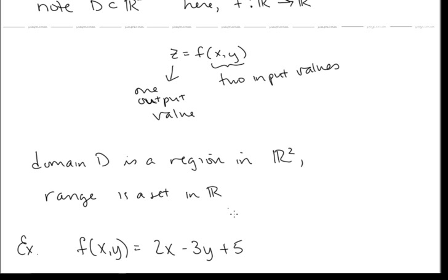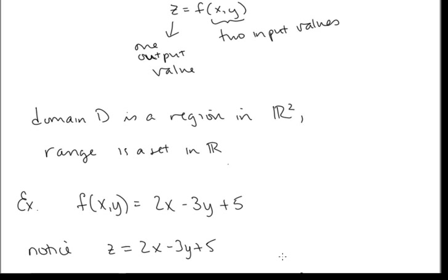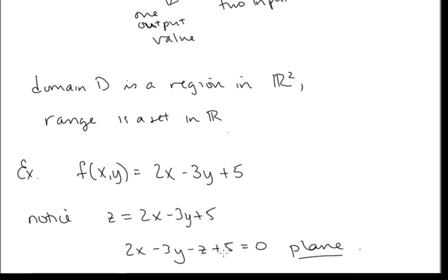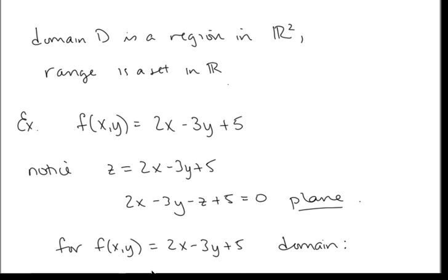For example, let's take a look at f(x, y) = 2x − 3y + 5. Notice that f(x, y) gives us our z value, so this is z = 2x − 3y + 5. We've seen this kind of equation before — this is a plane. What's the domain here? Are there any restrictions on x or y? No, there aren't. We can plug in any pair (x, y), so the domain is R².